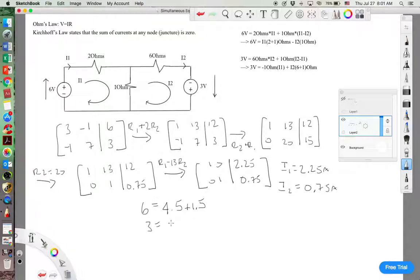And then 3 is equal to 0.75 times 7 minus 2.25. And that equals 5.25 minus 2.25, which is 3, correct.